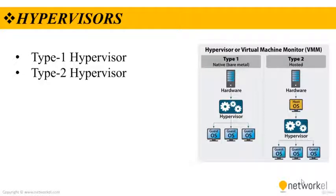There are two types of hypervisors: type 1 and type 2. Type 1 hypervisors run directly on the system hardware and are commonly referred to as bare metal or native. When it comes to type 2, this one requires a host OS to run. This is the type of hypervisor that is typically used by client devices.